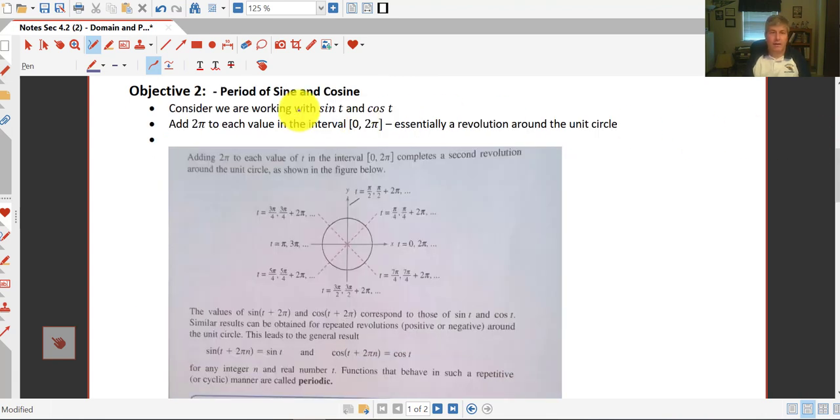The period of sine and cosine, let's consider we're working with sine of t and cosine of t. So we're talking some angle here, and we're using t just as our value. If we add 2 pi to each value in the interval 0 to 2 pi, essentially if we make revolutions around the unit circle, well what happens is we keep getting the same answers.